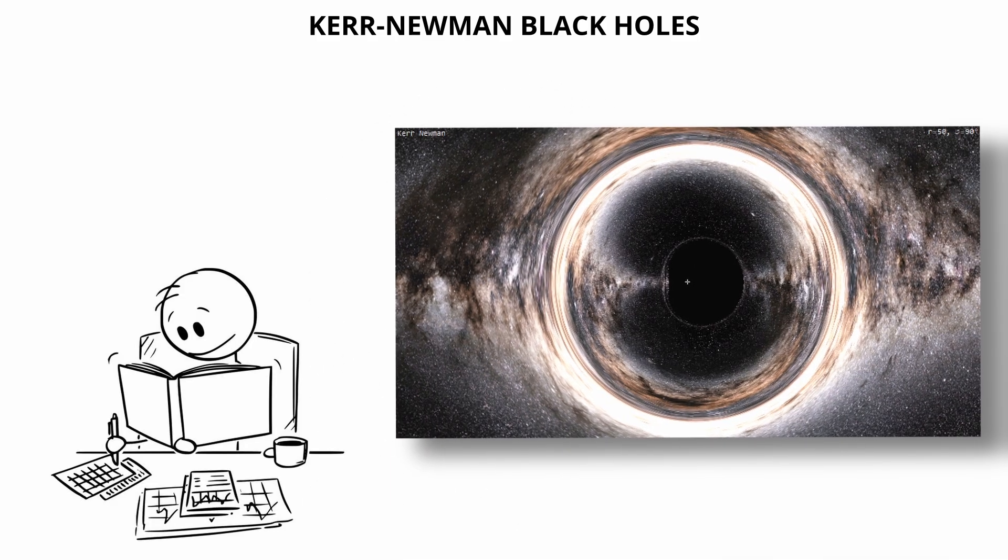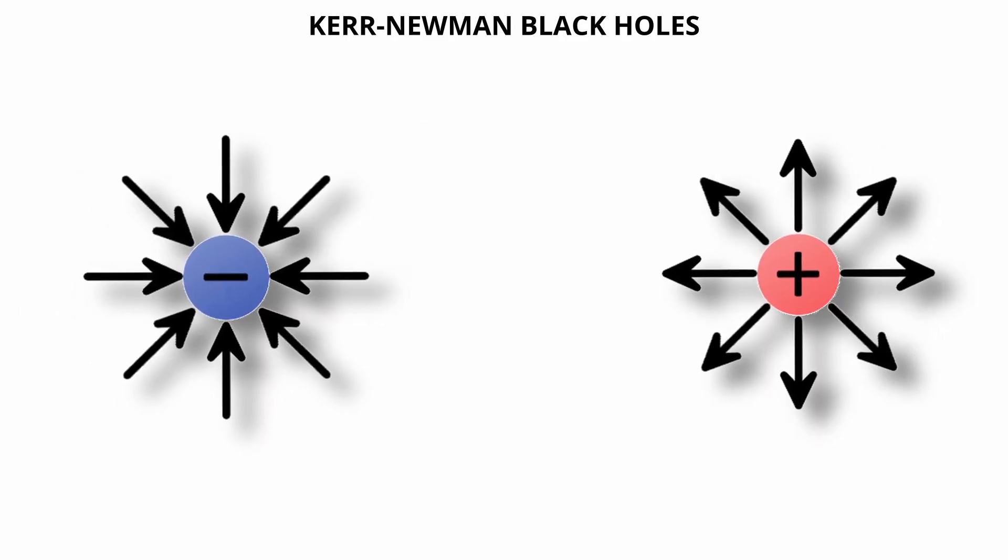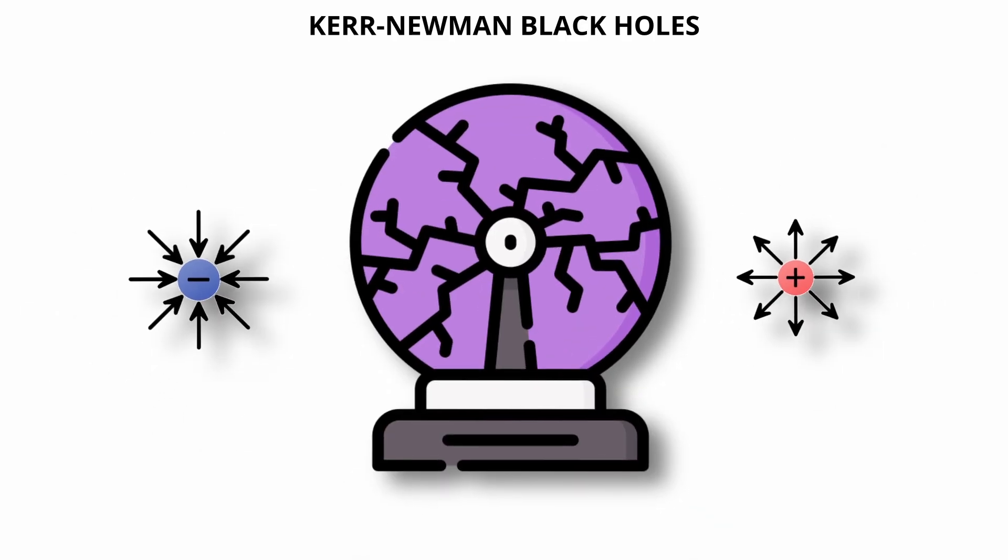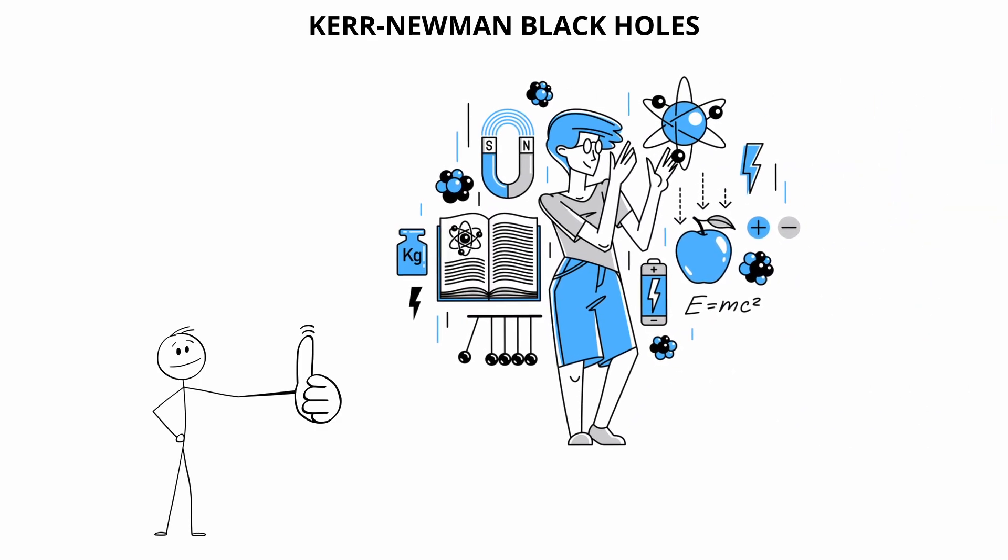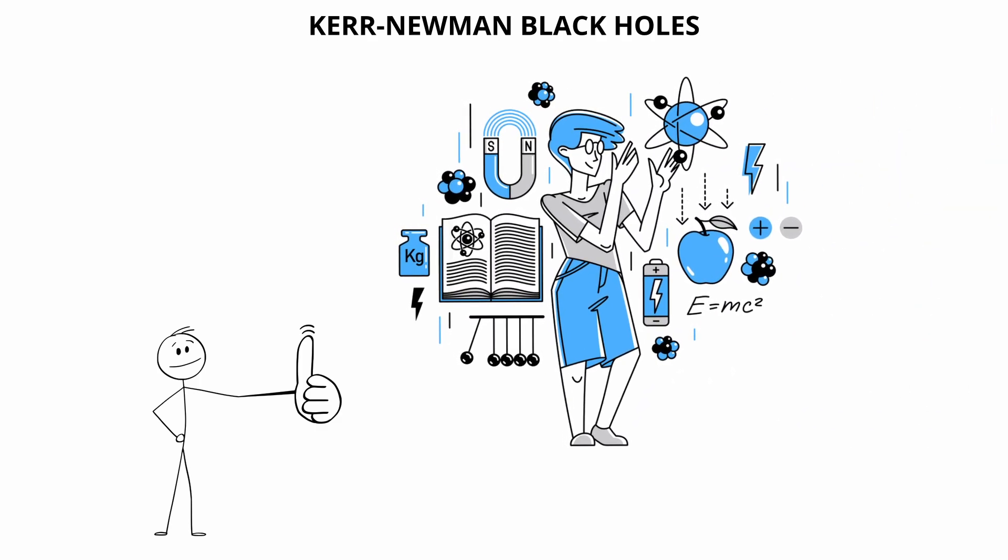Kerr-Newman black holes are largely theoretical. In nature, it's expected that any net electric charge would be neutralized quickly by surrounding plasma. However, the Kerr-Newman solution remains a critical model in theoretical physics, especially in exploring how gravity, electromagnetism, and quantum effects intersect under extreme conditions.